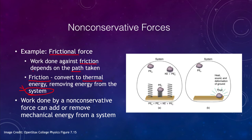An object will not reach quite as high on a track if friction is involved, because some of that potential energy was converted into kinetic energy and some would be converted into thermal energy or heat. That heat energy is removed, and the more friction there is the more energy will be removed. Work done by a non-conservative force can add or remove mechanical energy from a system.